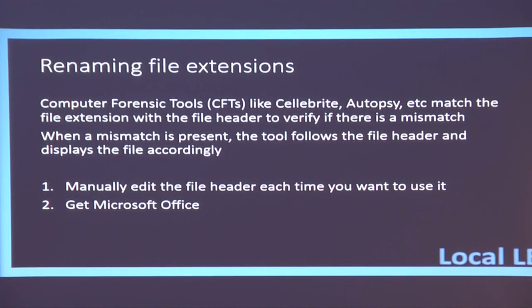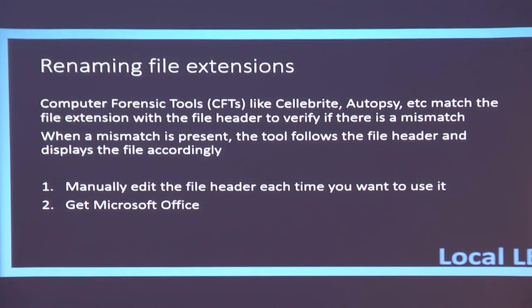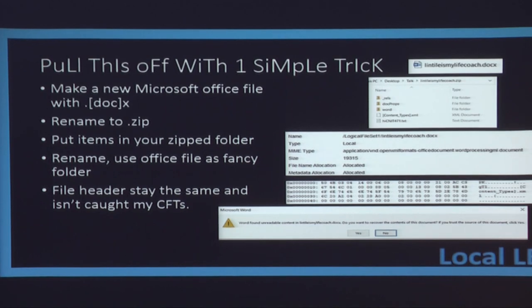Let's talk for a second about forensic software tools. My favorites are Autopsy for actual devices and Cellebrite for mobile. They're going to be able to find the mismatch of that extension we just mentioned and the file's header, which is located at the very front of the file. You can open it up in a hex editor and see what it says. All of these software packages know that — they'll scan it and say 'hey, these two things don't match,' and it actually draws attention to your evidence. You can manually edit the file header each and every time you open and close that file, which is really, really obnoxious.